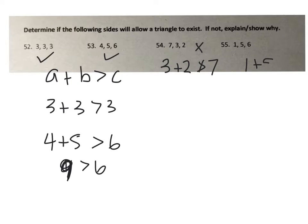In 55, with sides 1, 5, 6: 1 plus 5 is not bigger than 6. It's also not a triangle.